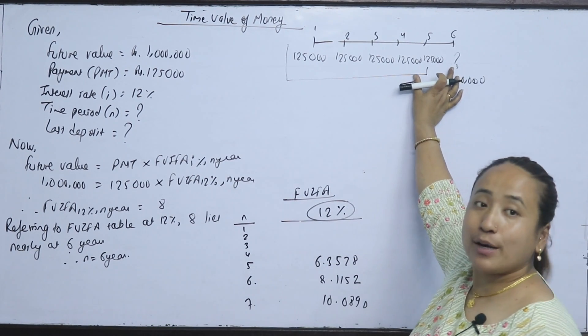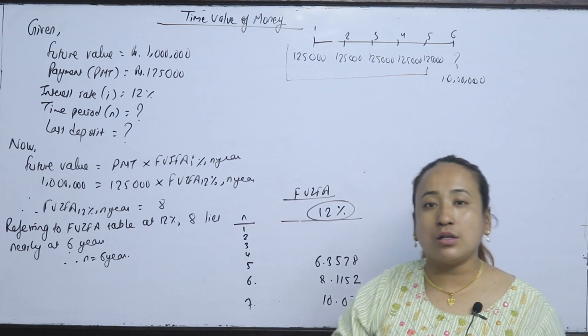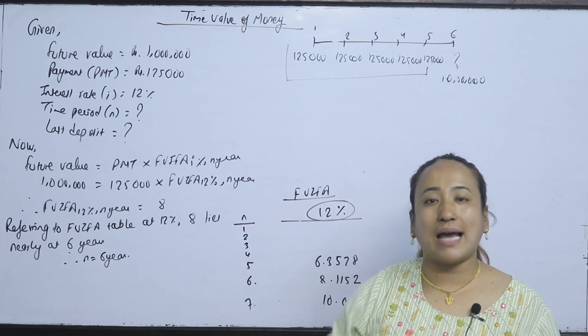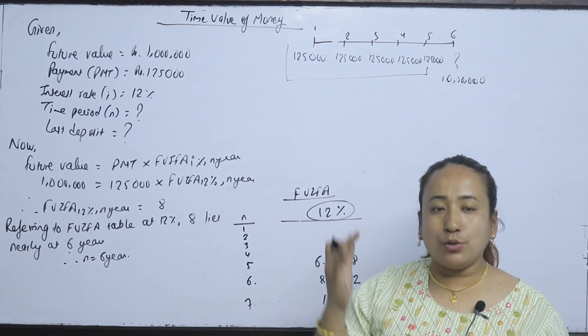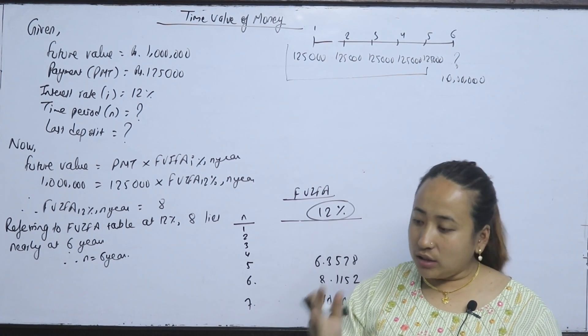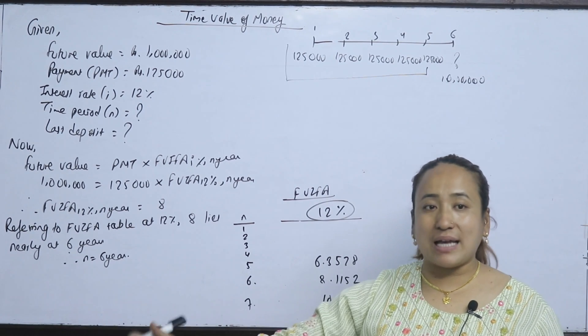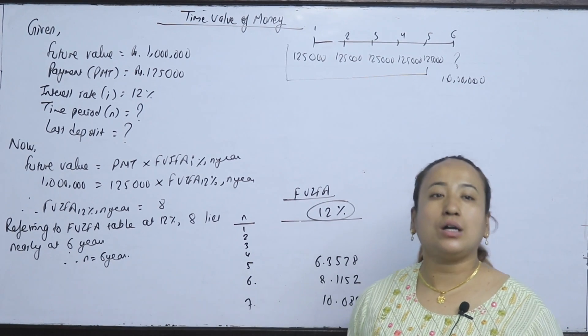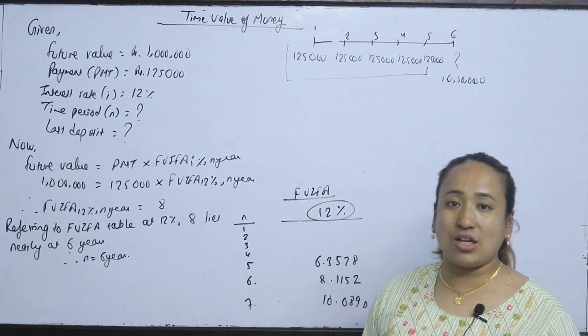The gap is 1 plus i. Future value is multiplied by 1 plus i. Into 1 plus i — that's 6 years.